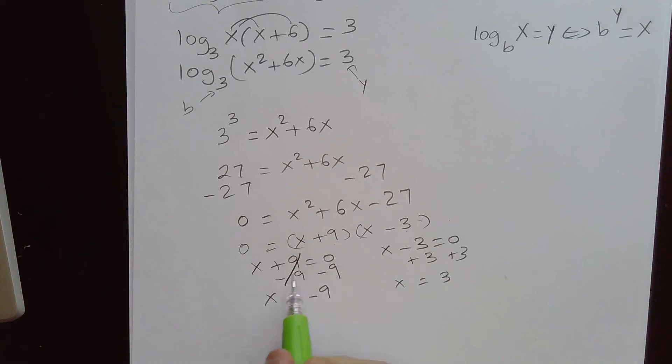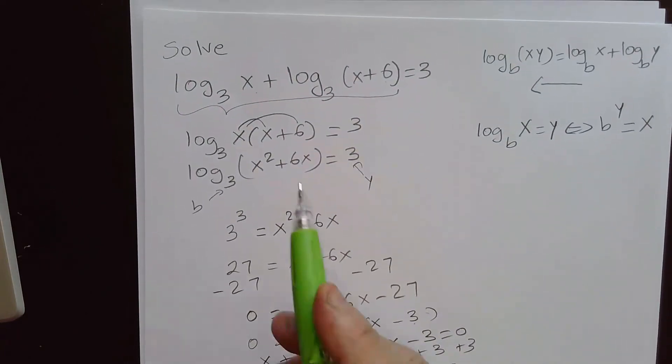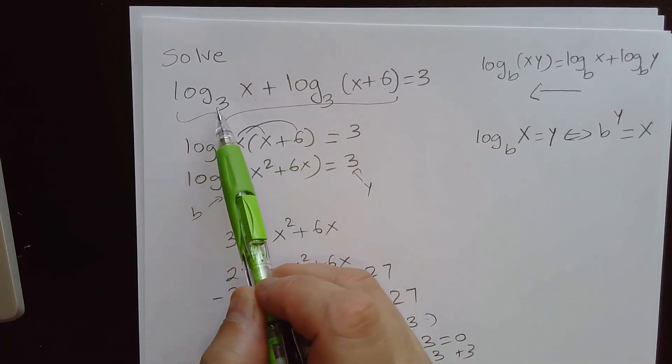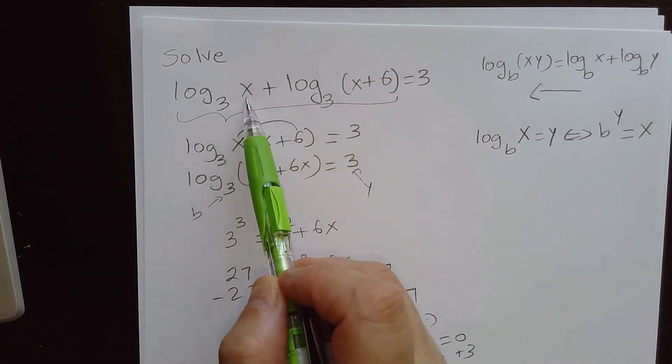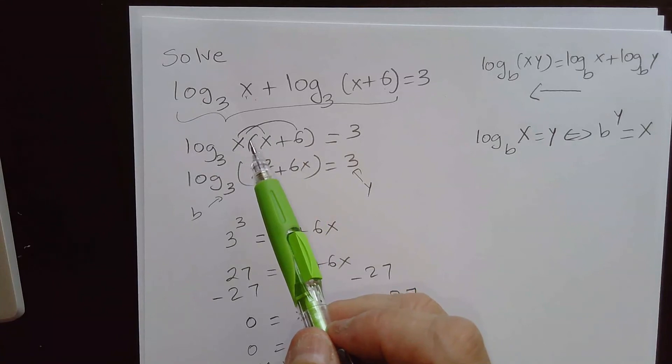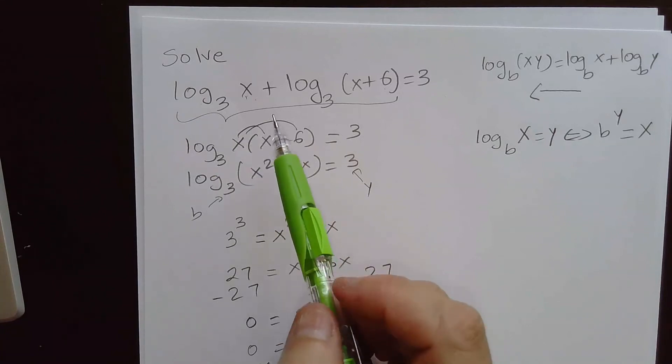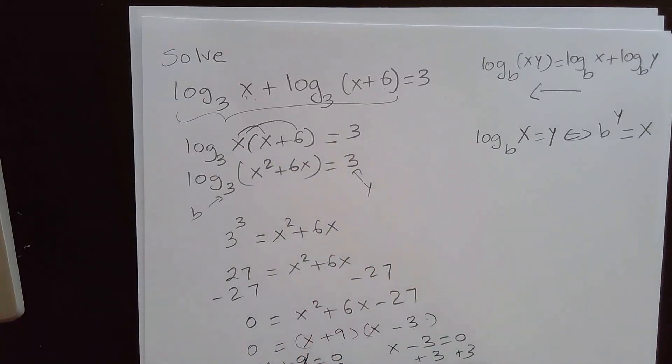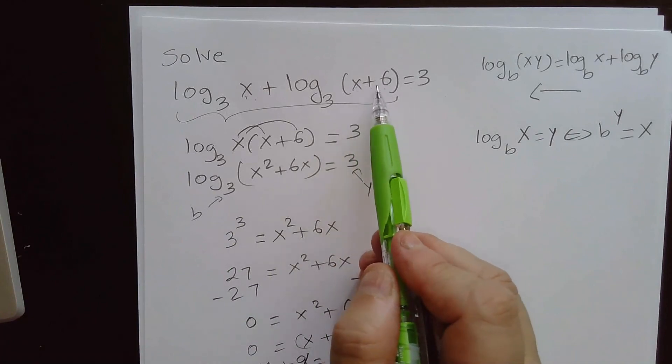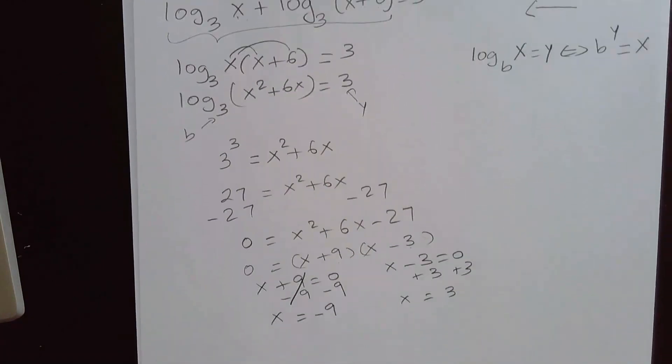Now here we have a problem. When x is negative, x cannot be negative here, because we cannot take the log of a negative number. You can go ahead and check it in any calculator. Take for instance the log of negative 9, and you're going to get an error message. So this is not a possibility, x equal to negative 9 is not a possible solution, even in here as well. When you have negative 9 plus 6, it's going to be negative 3. So it's not going to work out either way.